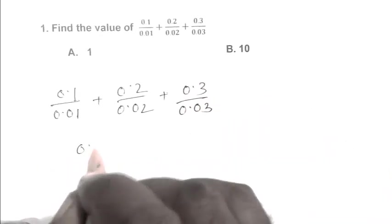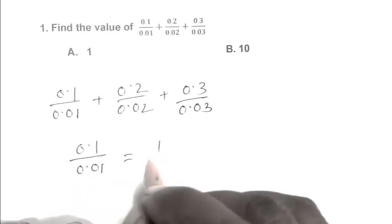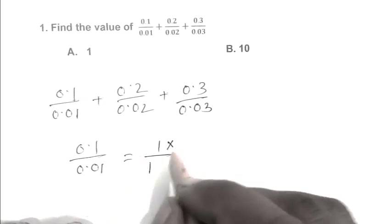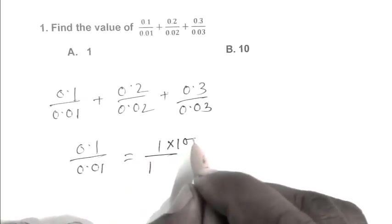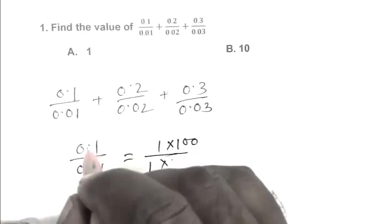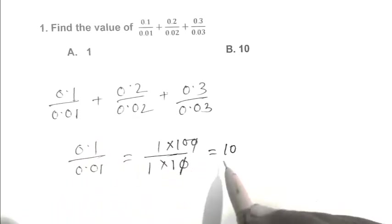For 0.1 upon 0.01, that's 1 upon 1. To eliminate the decimal point we multiply by 10 here, and if we eliminate this point we multiply by 100. So friend, it becomes 10.